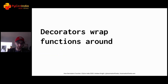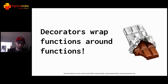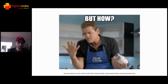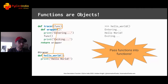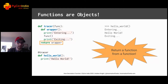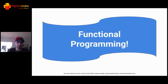Decorators wrap functions around functions. Think about them like candy bars. The decorator is like the foil wrapper, and the decorated function is like the chocolate inside. Decorators are possible because in Python, functions are objects. In fancy language, we say functions are first-order values. Since functions are just objects, we can pass them into other functions as arguments, define new functions inside existing functions, and return a function from a function.